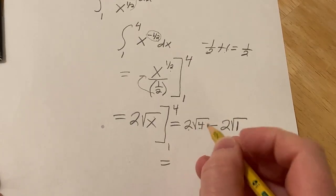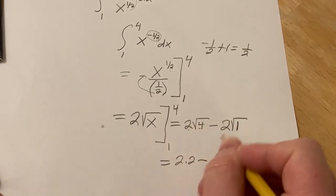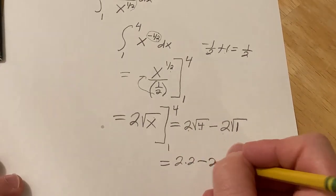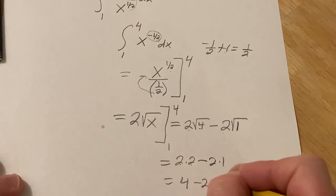So this is equal to 2 times, the square root of 4 is 2, so you get 2 times 2, minus, and the square root of 1 is 1, so you get 2 times 1. 2 times 2 is 4, and then minus 2, and so you get 2.